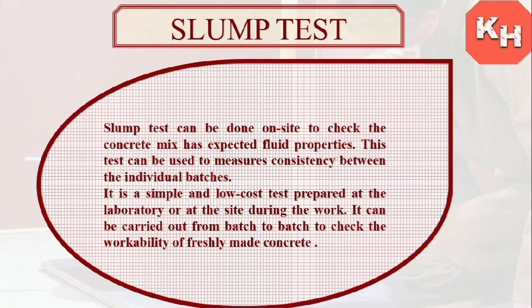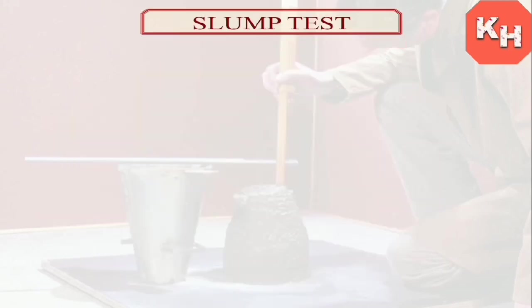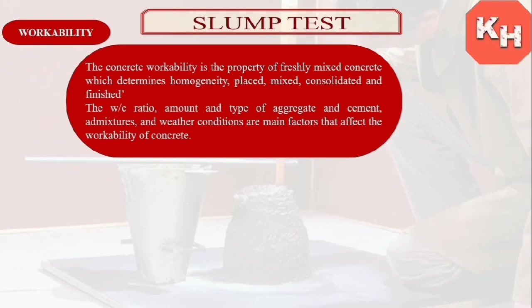For each and every individual batch, the slump test is done. It is a very simple and low-cost test that can be carried out both in the laboratory and at site, from batch to batch to check the workability of freshly made concrete. Workability is the property of freshly mixed concrete which determines homogeneity, placing, consolidation, and finish — how easy it is to place the concrete. Water-cement ratio, amount and type of aggregate, cement, admixtures, and weather conditions are the main factors which affect workability.